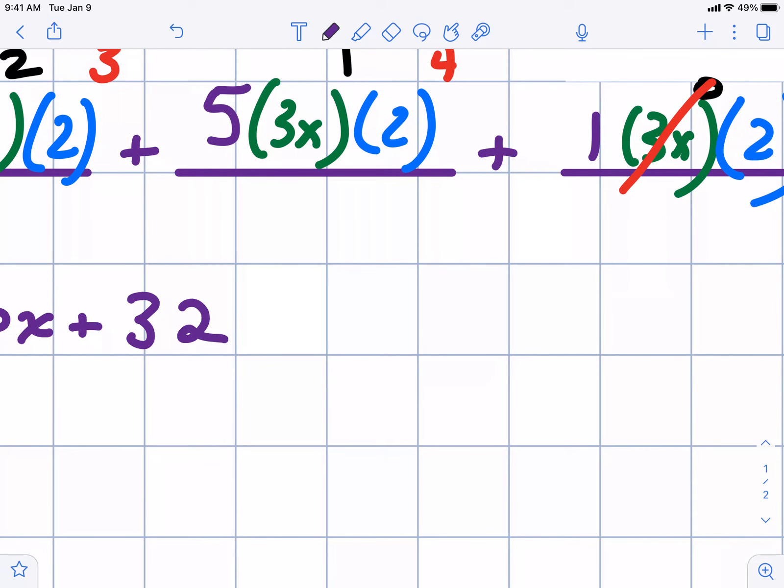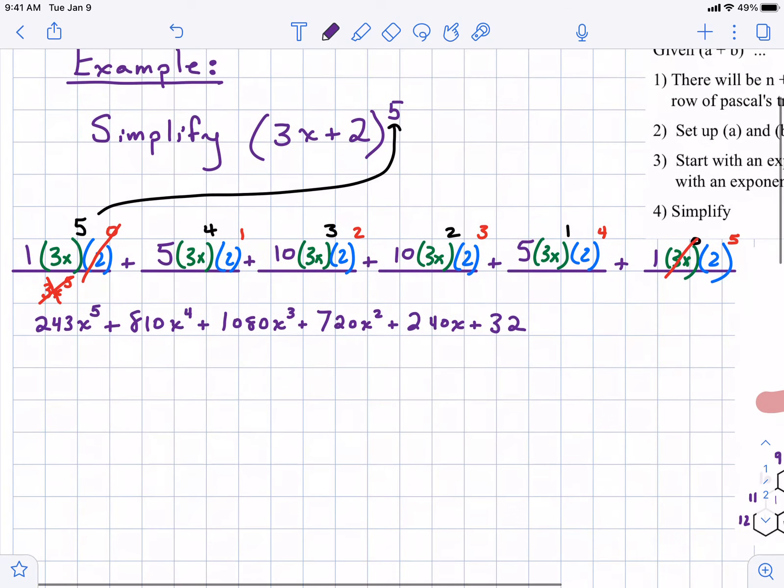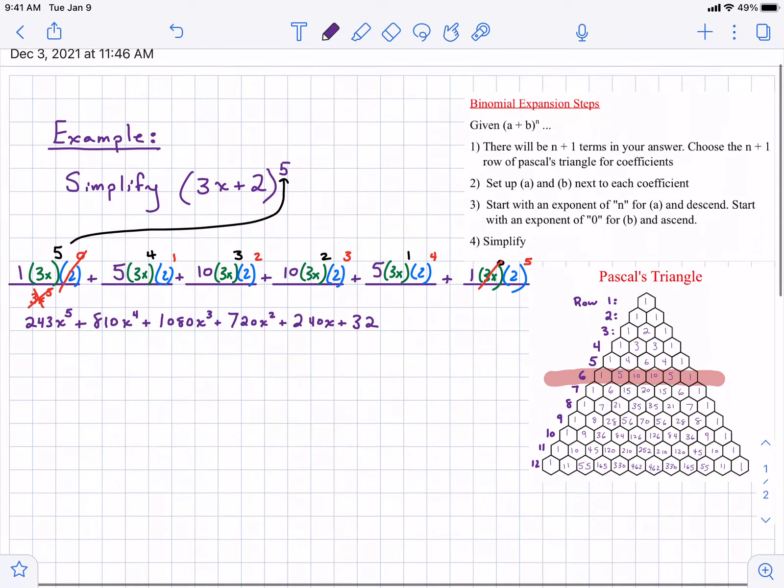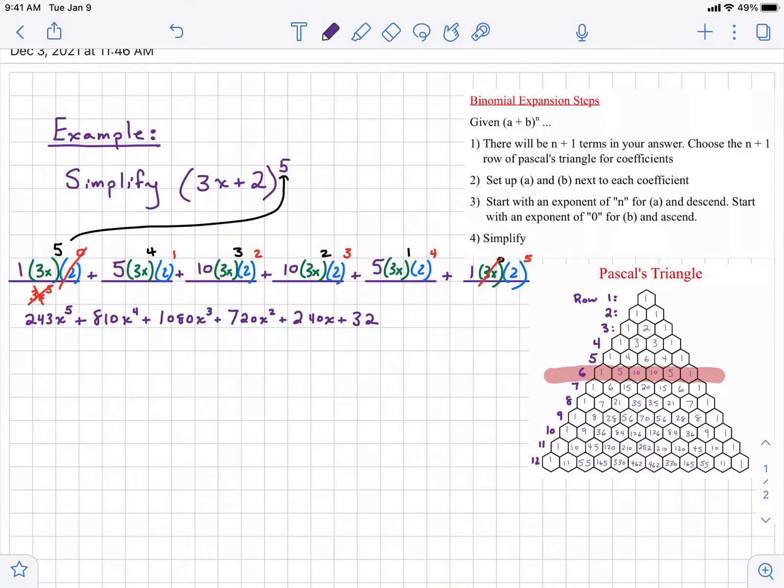Again, the times 1 doesn't change anything. And this will give us our final result. It's already in standard form. We're working our way down from the highest exponent. Everything's fully simplified here. This is our final answer.